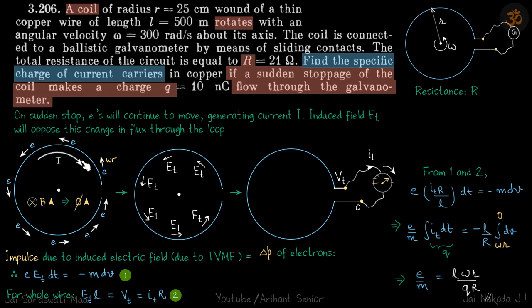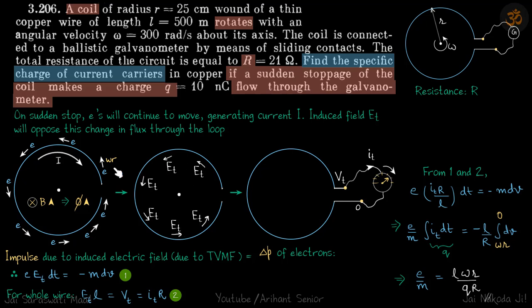Whenever something happens suddenly, we need to consider impulse. The electrons have velocity omega r and then are brought to rest very quickly, so we use the impulse-momentum approach. The impulse due to the induced electric field equals the change in momentum of the electrons. The induced electric field opposes the electron velocity, bringing them to rest. So: force on electrons is e·E_T, and the impulse equation is e·E_T·dt = -m·dv.